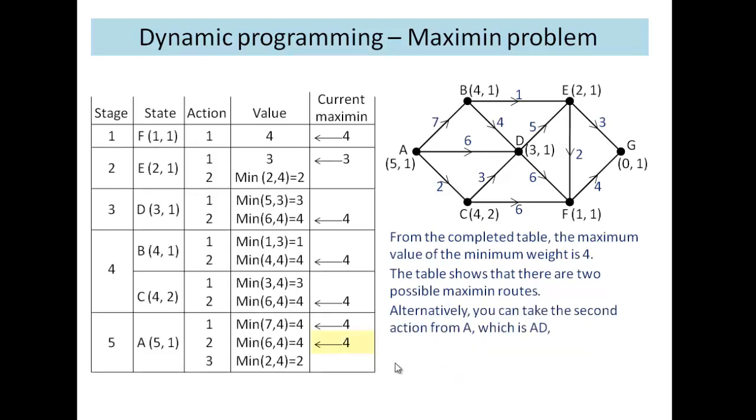And if we look now at the completed tabulation, we can see here, if we look at A, we've gone for this value here and this value here. These both have values of 4, so we actually have two maximin routes here.